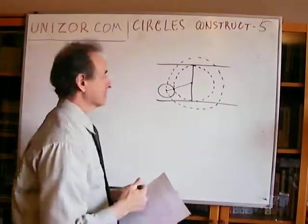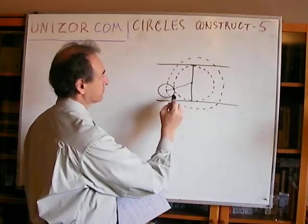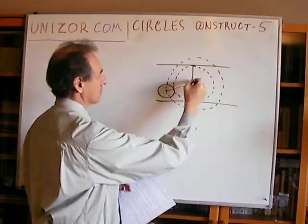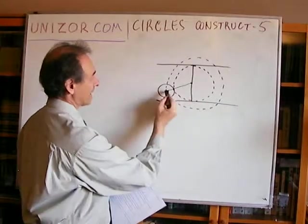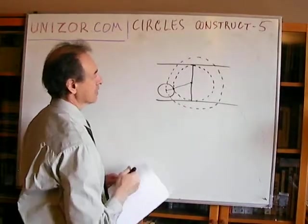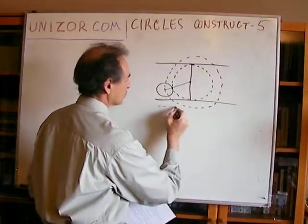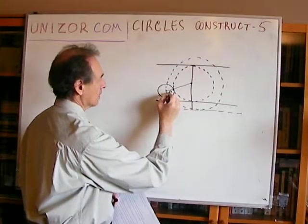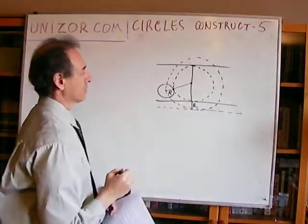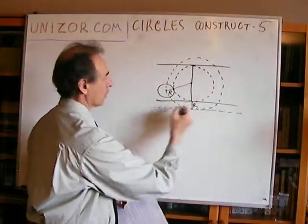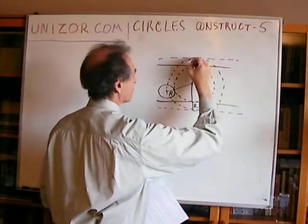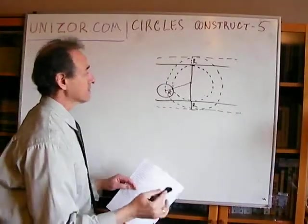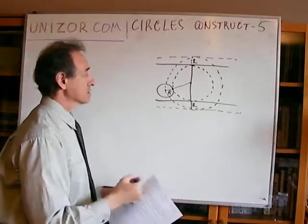It's obviously easier to construct a circle which contains a given point rather than one tangential to a given circle. Also, if the smaller circle is tangent to this line, then if we increase its radius by r — the known radius — it will be tangential to another line parallel to this one, also at distance r.